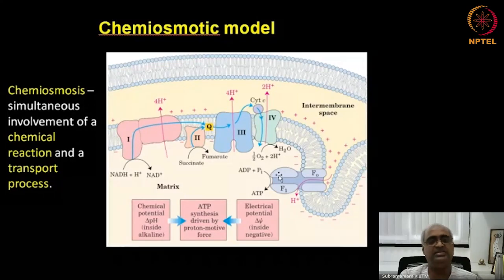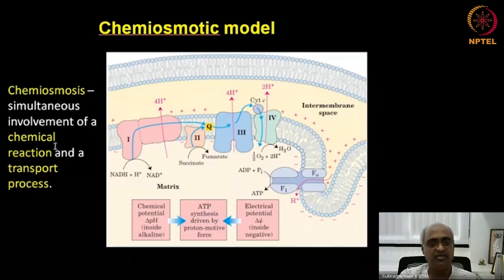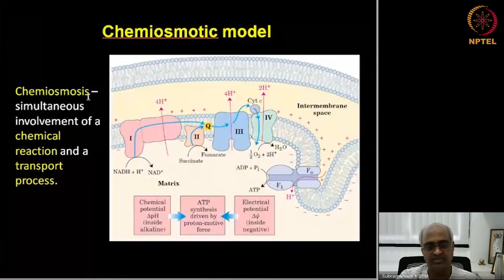Since the process involves a chemical potential like pH difference and a transport process — protons coming down the gradient — Peter Mitchell coined the word 'chemiosmosis' to signify that the process involves both a chemical reaction and a transport process. Both energy components go into ATP synthesis.